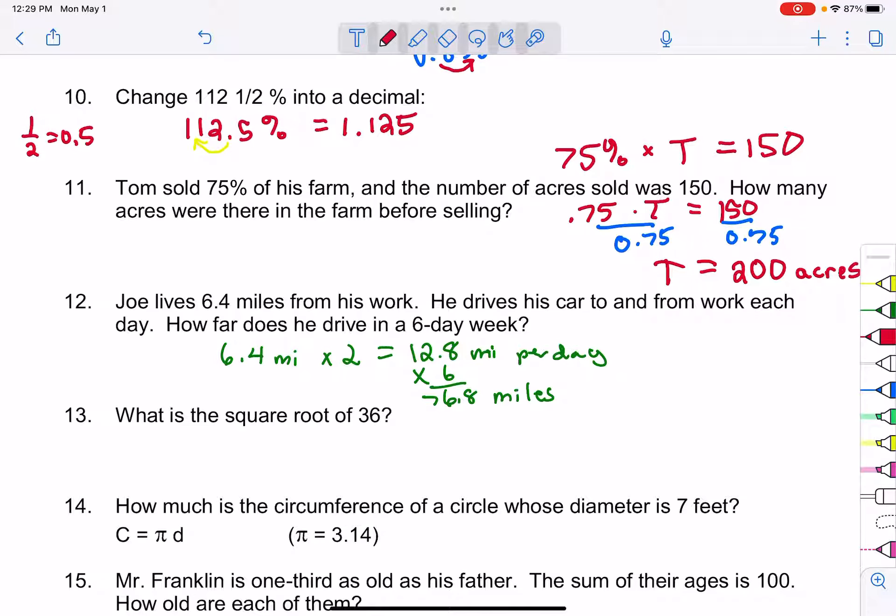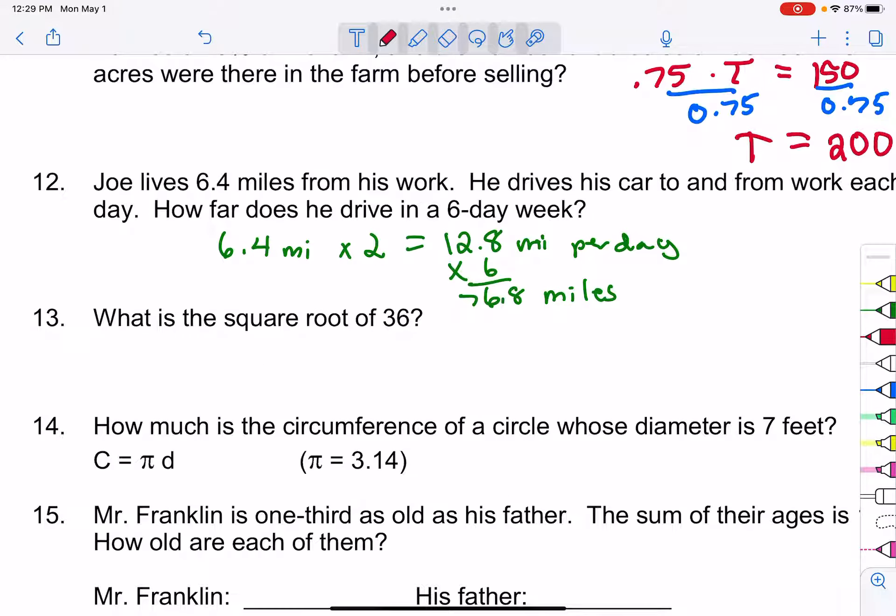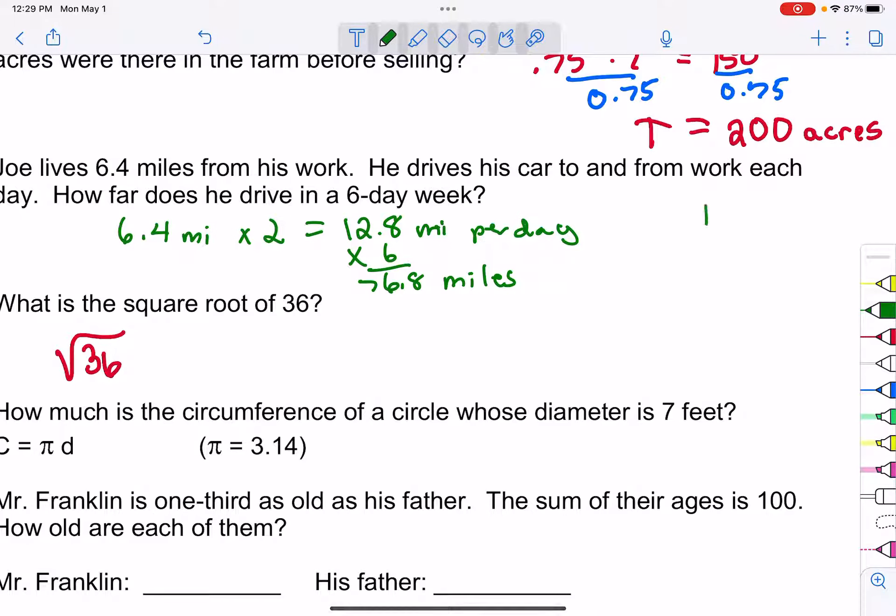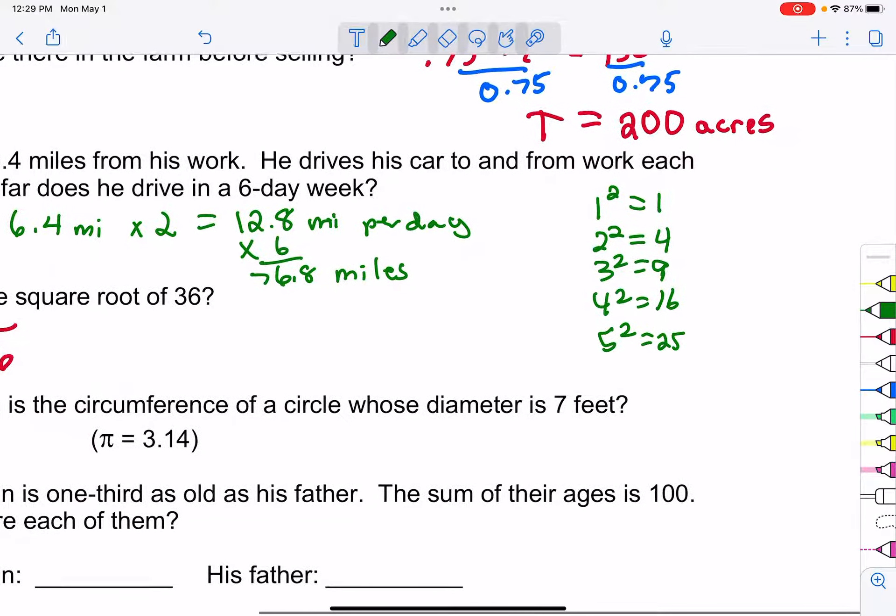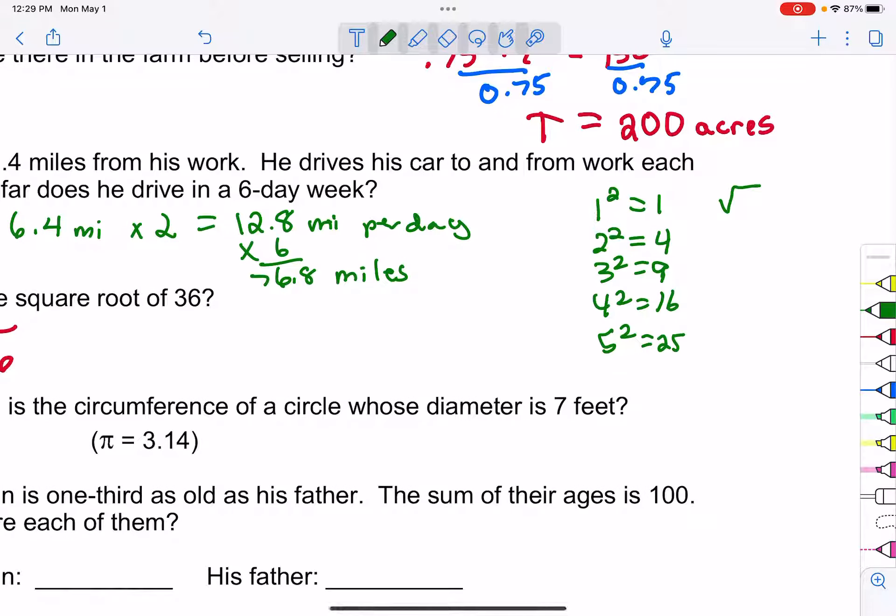The last one we're going to do in this video is number 13: What is the square root of 36? Let me write it out, but then we want to talk about numbers for a minute. So I'm just going to do a list here. One squared means one times one which is one, two squared means two times two, three squared three times three, four squared four times four, five squared five times five. Now let's talk about what a square root is. The square root undoes that process, it's the opposite of that process, kind of like multiplication and division. So the square root of one is one, the square root of four is two, the square root of nine is three, the square root of 16 is four, the square root of 25 is five.